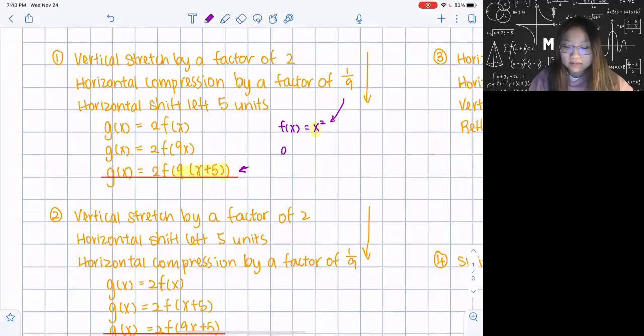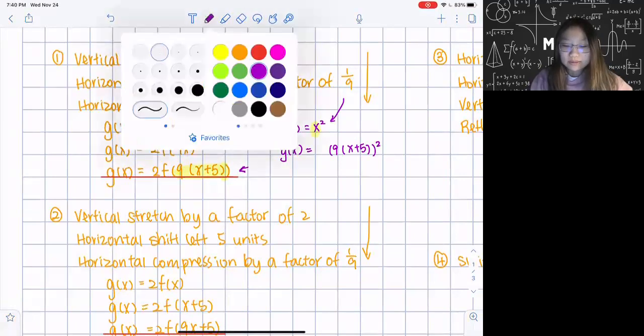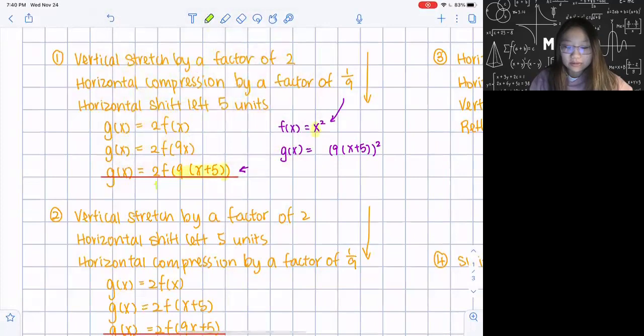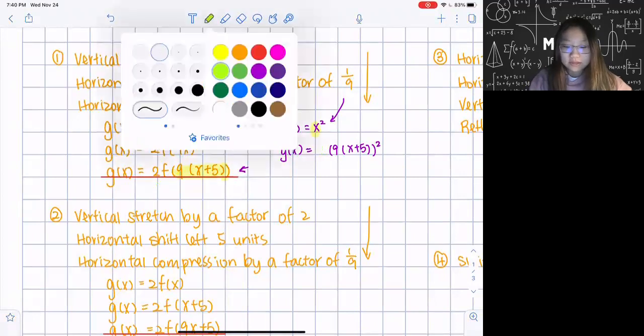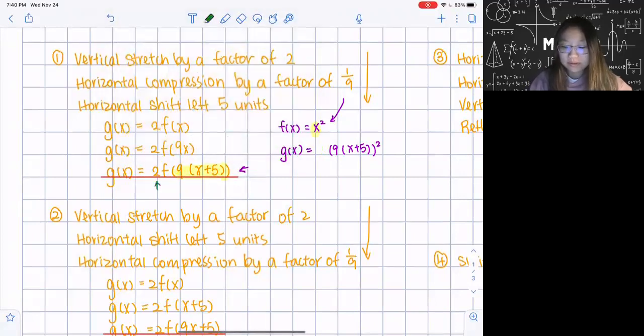So let me do my first step. You'll be surprised that my first step is actually just replacing this x with everything inside this parentheses of f. So let's write that. g(x) equals to 2(9x + 5) squared. Then my next step is going to be written the thing outside over here, which is just a 2. I'm going to write a 2 over here. See, it's pretty easy. This is actually completed.